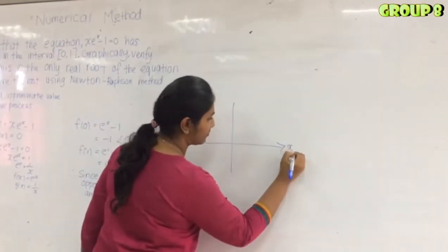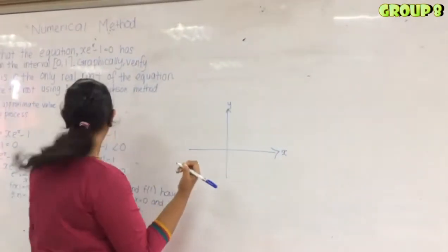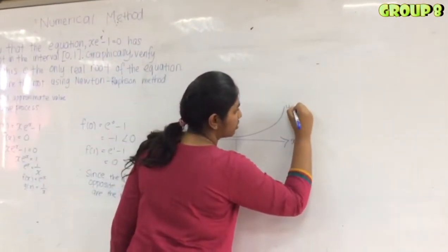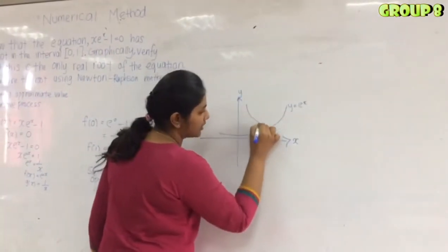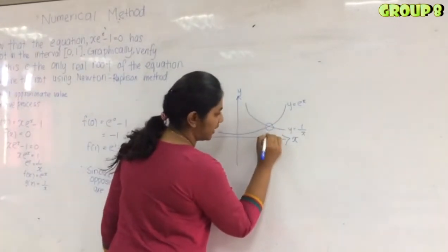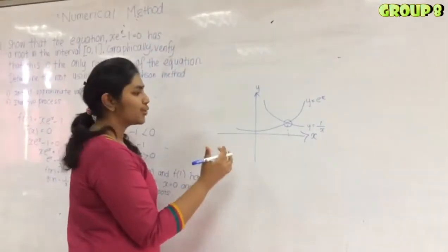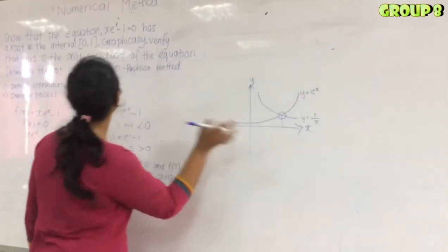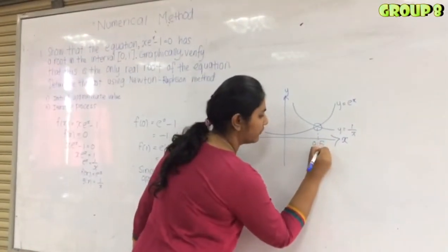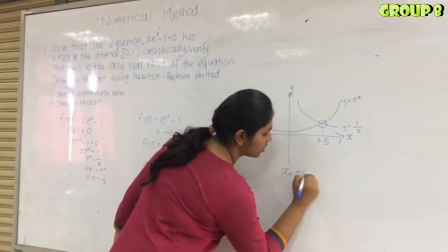Now we are going to sketch the graph. Draw the axes first. The first equation is y = e^x and the other one is the reciprocal y = 1 over x. The intersection point of these two graphs is our root. Since we don't know the exact initial approximate value, we assume it is between 0 and 1, so x₀ = 0.5.